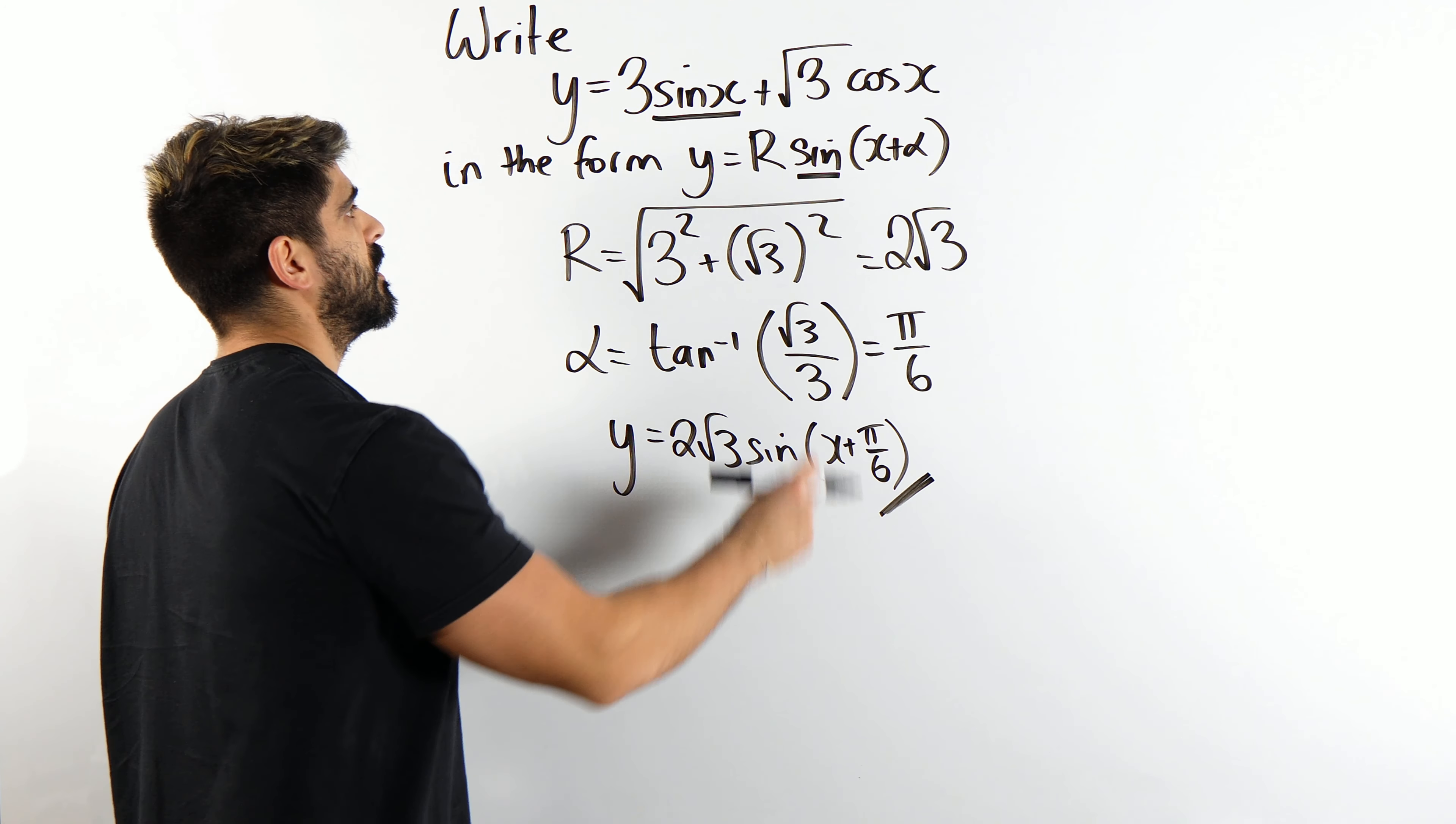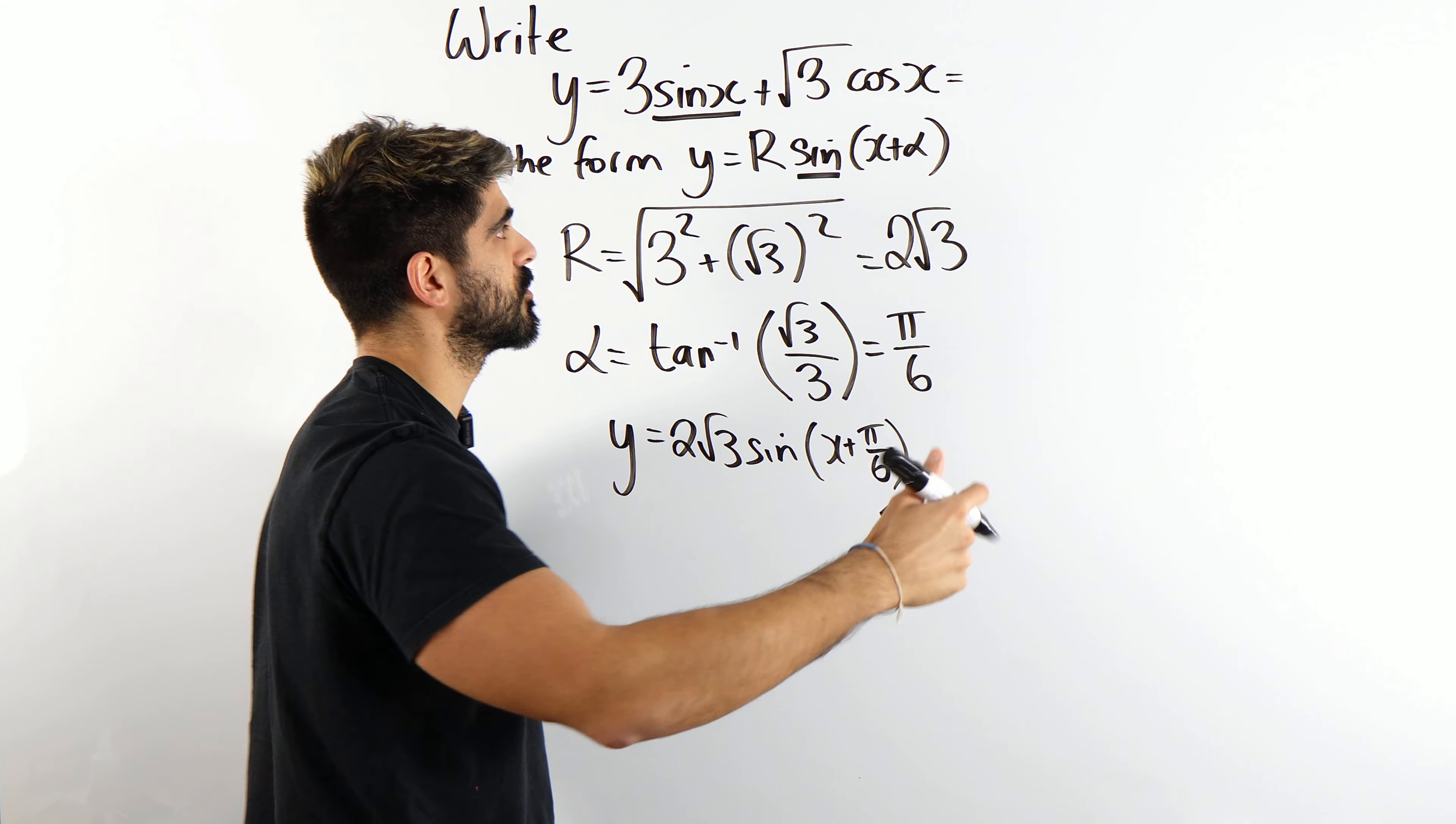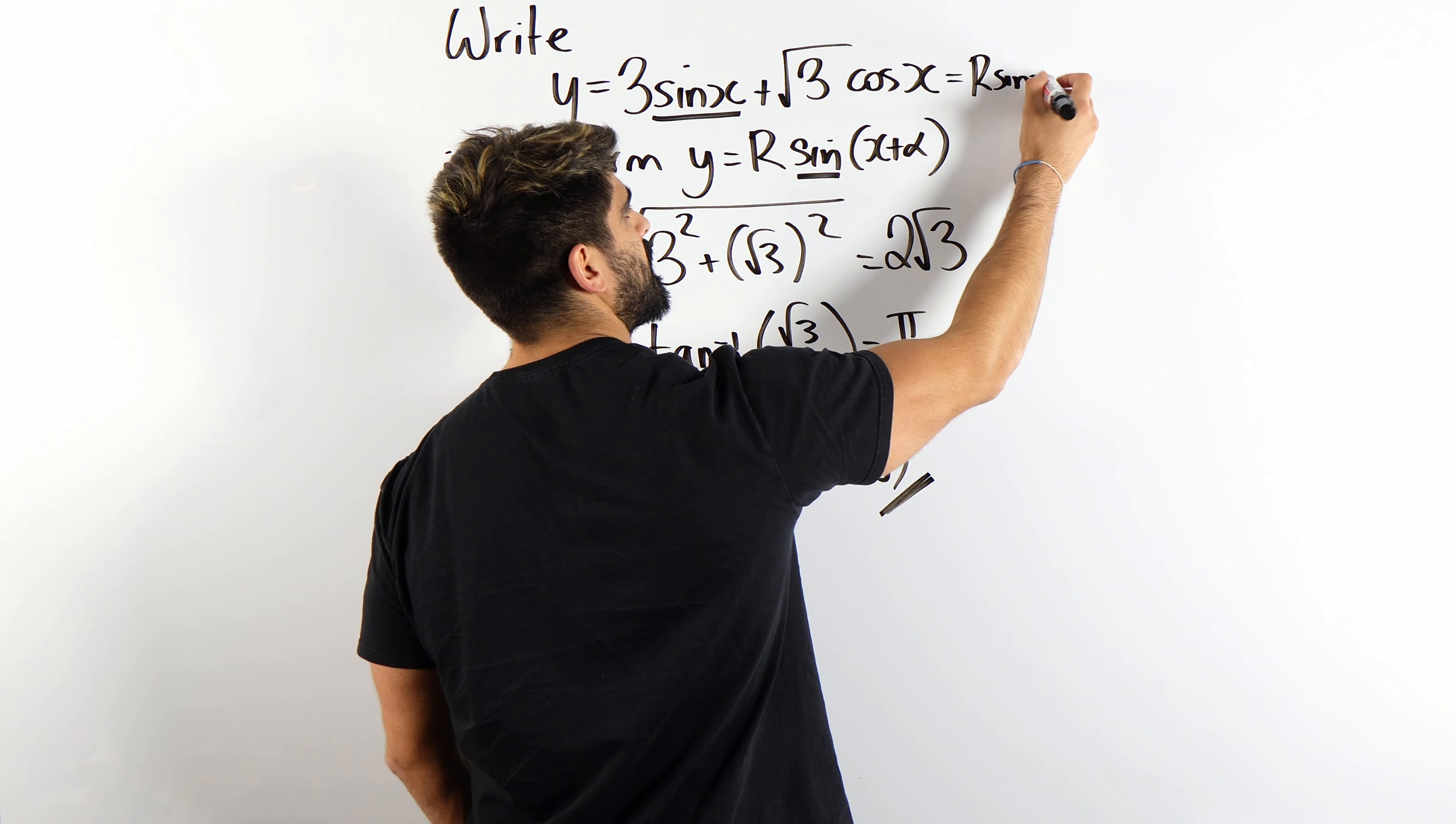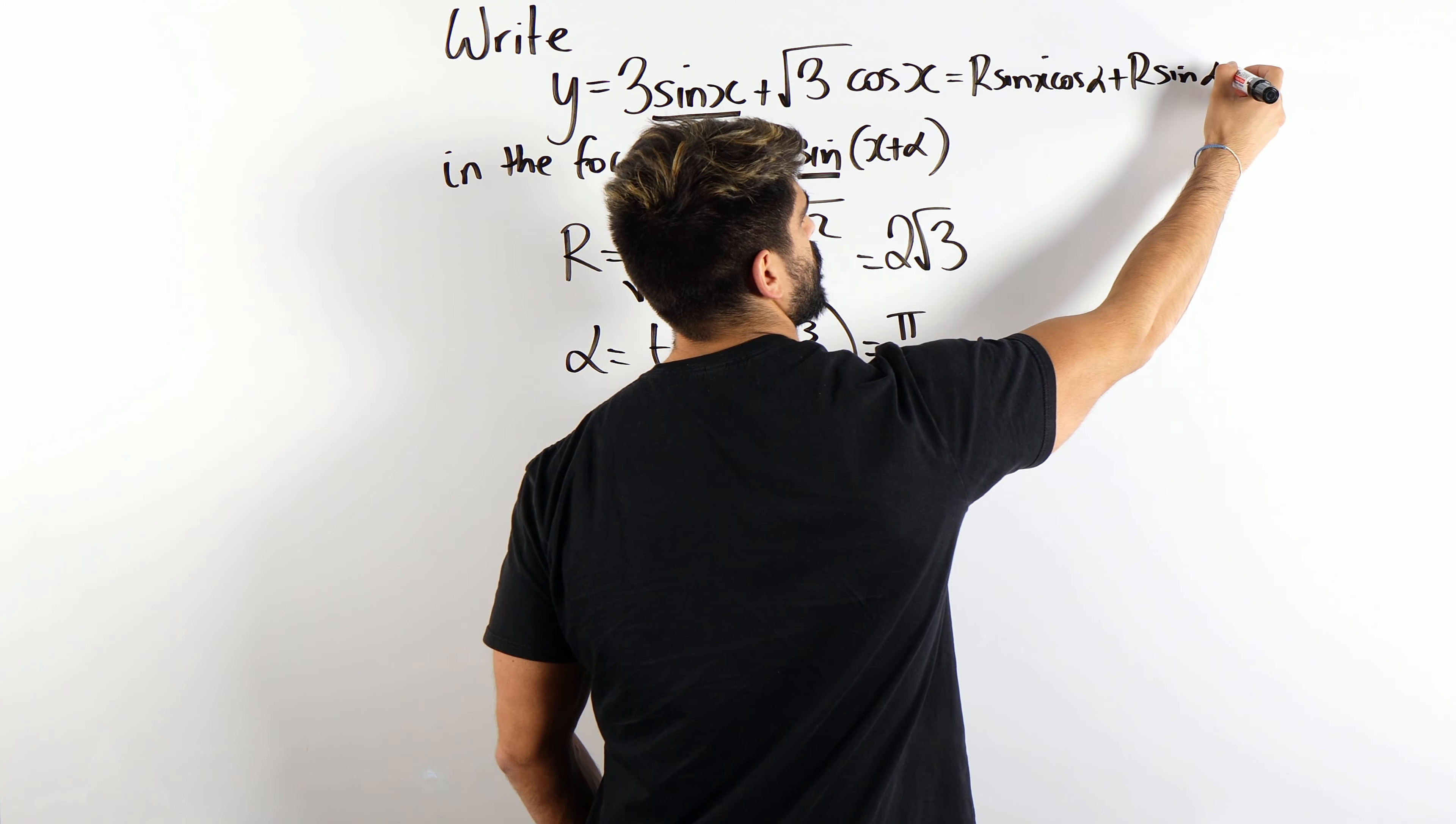Let me show you guys what you've probably been taught. You have been taught to do the addition rule on this, right? You'll say this equals, so remember for sin it goes sin cos sin cos, right? With the coefficient of R, we have R sin x cos alpha. Then sin keeps the sin the same R. And then we swap the angles.